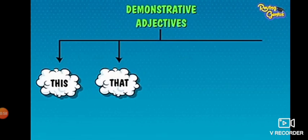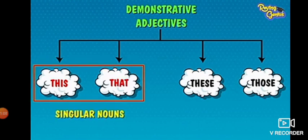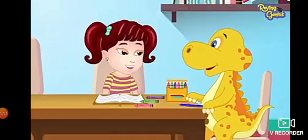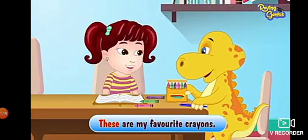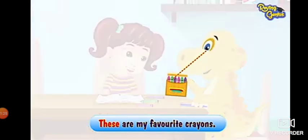There are two more demonstrative adjectives: these and those. We use this and that for singular nouns, and these and those for plural nouns. For example, these are my favorite crayons. As these crayons are near to me, I used these.